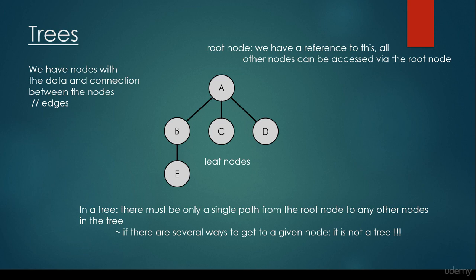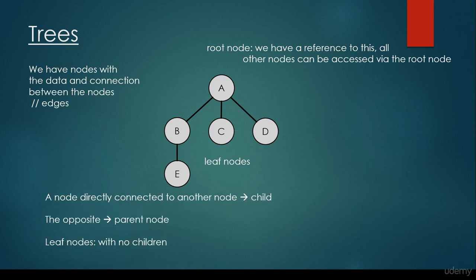If there are several ways to get to a given node, then it's not going to be a tree. For example, this situation is not going to be a tree because we can get from A to D directly, or we can go from A to C and then from C to D — so there are two ways to the same node, so it's not a tree. A node directly connected to another node is called a child, and the opposite relationship is the parent node. So the children of A are nodes B, C, and D. The child of B is node E. The parent of E is B, and the parent of B, C, and D is node A.